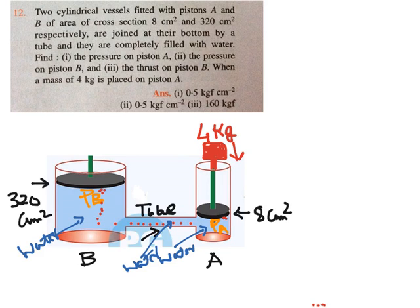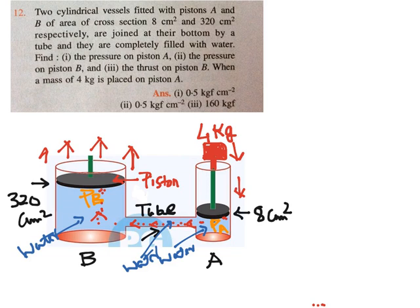When piston A pushes the water downward, the pressure is transmitted through the liquid and then acts on piston B, pushing it upward. Piston B wants to get out of vessel B. The pressure flows from A through the tube and hits piston B on top.